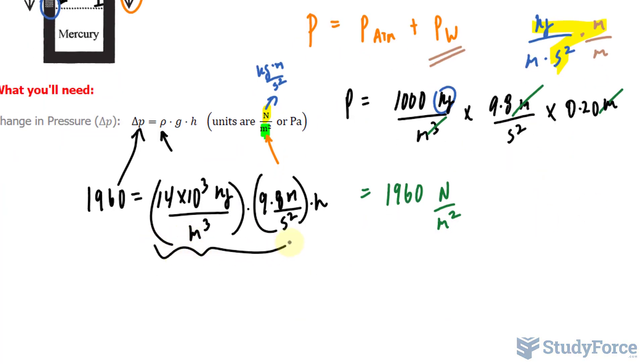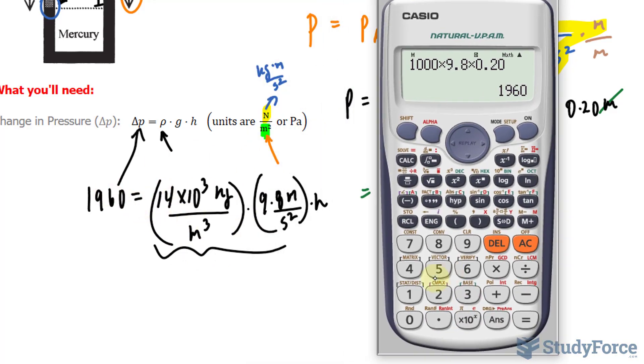We'll multiply these two factors together, then divide both sides of the equation by the product, and that will give us the value of h. So 14 times 10 to the power of 3, times 9.8, and we'll take this value, divide both sides of the equation by it.